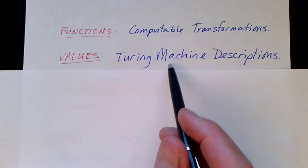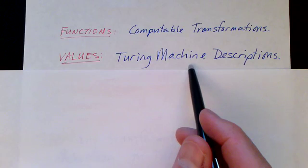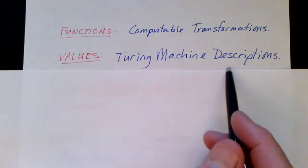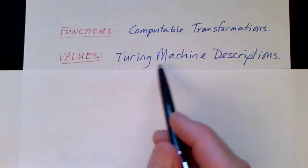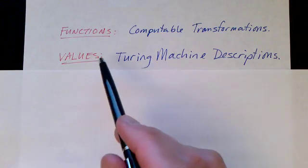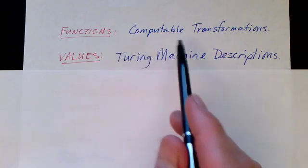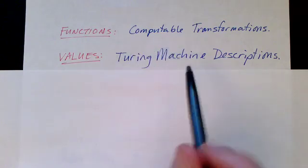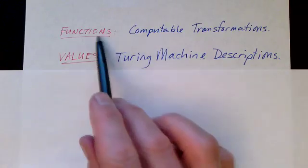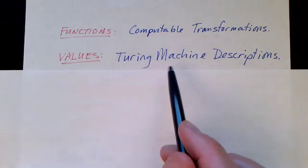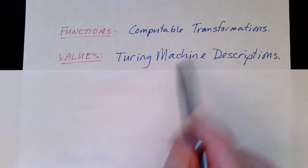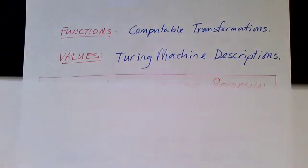We can also consider Turing machines. The description of Turing machines forms a set, the set of Turing machine descriptions. We can imagine functions or transformations on Turing machine descriptions. Our functions are transformations and our values are descriptions of Turing machines. We're transforming one Turing machine into another.